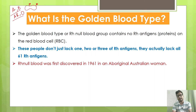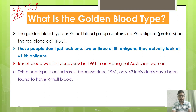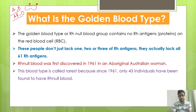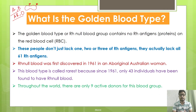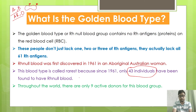Rh null blood, or golden blood, was first discovered in 1961 in aboriginal Australian women. This blood type is called rare because since its discovery in 1961, only 43 individuals have been found to have Rh null blood throughout the world, and there are only nine active donors for this blood type available globally.